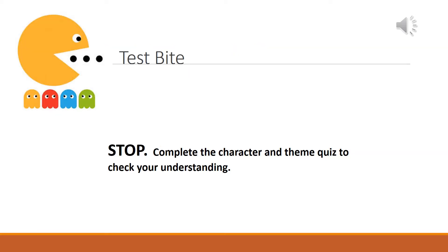So here we come to another test bite — that is your signal to stop the presentation where we are at the moment. Go on to Google Classroom and go to Task 2, where you will see a quiz called Understanding Character and Theme. Answer each of those questions and it will give you a mark out of 10. Notice the last question is worth four marks, so you need to write four separate things to pick up the full 10 out of 10. Please don't be afraid to go back to the video and listen again if you're not quite sure.